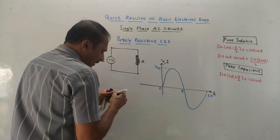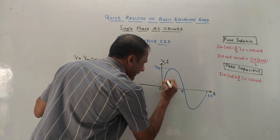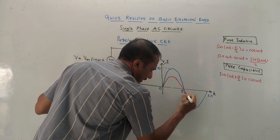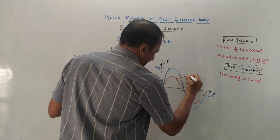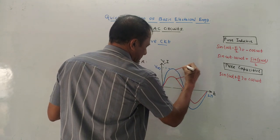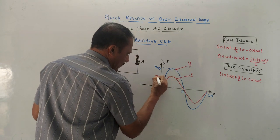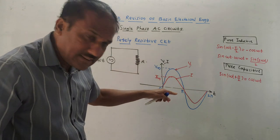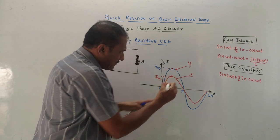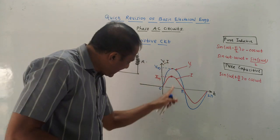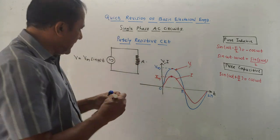This voltage is maximum voltage Vm — this is the voltage waveform. In case of purely resistive circuit, to draw the current waveform, keep in mind: for a resistive circuit, voltage and current are in the same phase. So you should get a similar waveform for current, only with smaller amplitude Im. The maximum value of voltage and current are along the same line, confirming voltage and current are in the same phase.